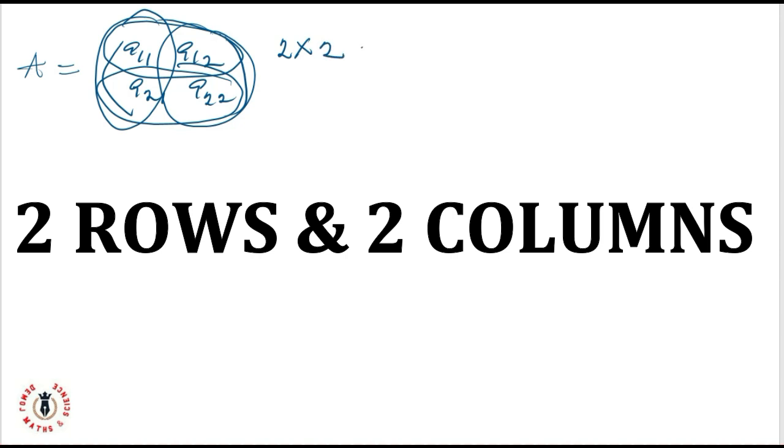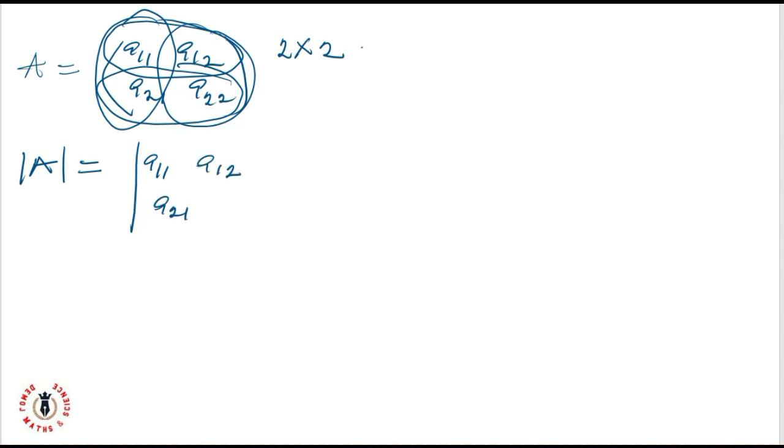Now, to find the determinant of this matrix, the determinant is denoted with a bar across the matrix. So, I'll represent this as A11, A12, A21, and A22. For the determinant of a 2x2 matrix, I'll simply multiply the major diagonal, which is A11 multiplied by A22 minus A12 multiplied by A21. The result of this will give me the determinant of matrix A.